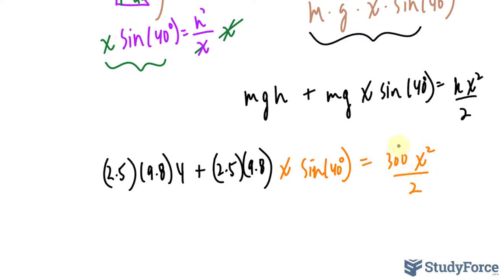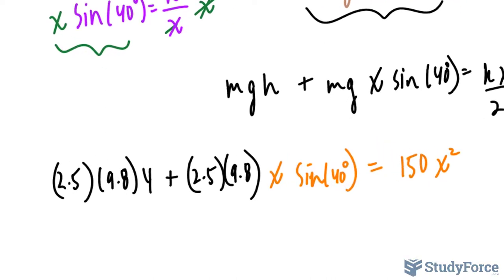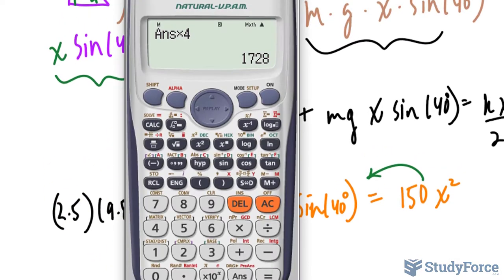300 over 2, I can replace that with 150 just to simplify things. And as you can tell, we're dealing with a quadratic. x to the power of 2 is the highest power, so this is a quadratic. I'll take all my terms over to one side, and I'll start to calculate some stuff.